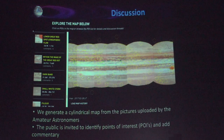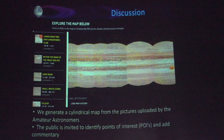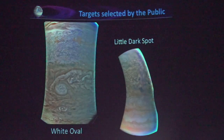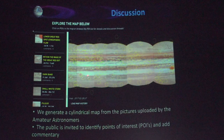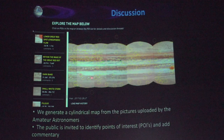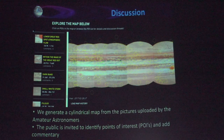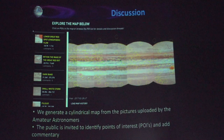This is a place for discussion, so people can write comments on other people's points of interest. These circles are the points of interest that were identified — you see the cylindrical map and you basically draw a circle around what you think is interesting. You can see these white storms all along here; that's actually called the String of Pearls. Those were pretty much the first ones, right after the Great Red Spot, to be identified as places we should take pictures.